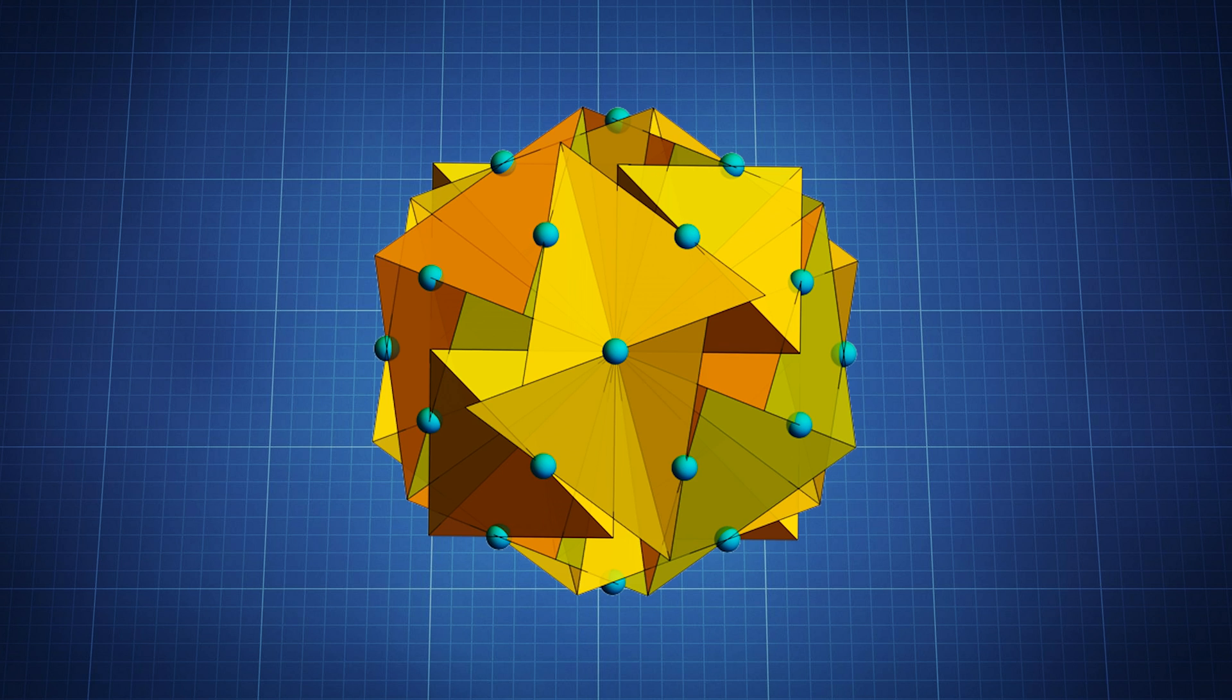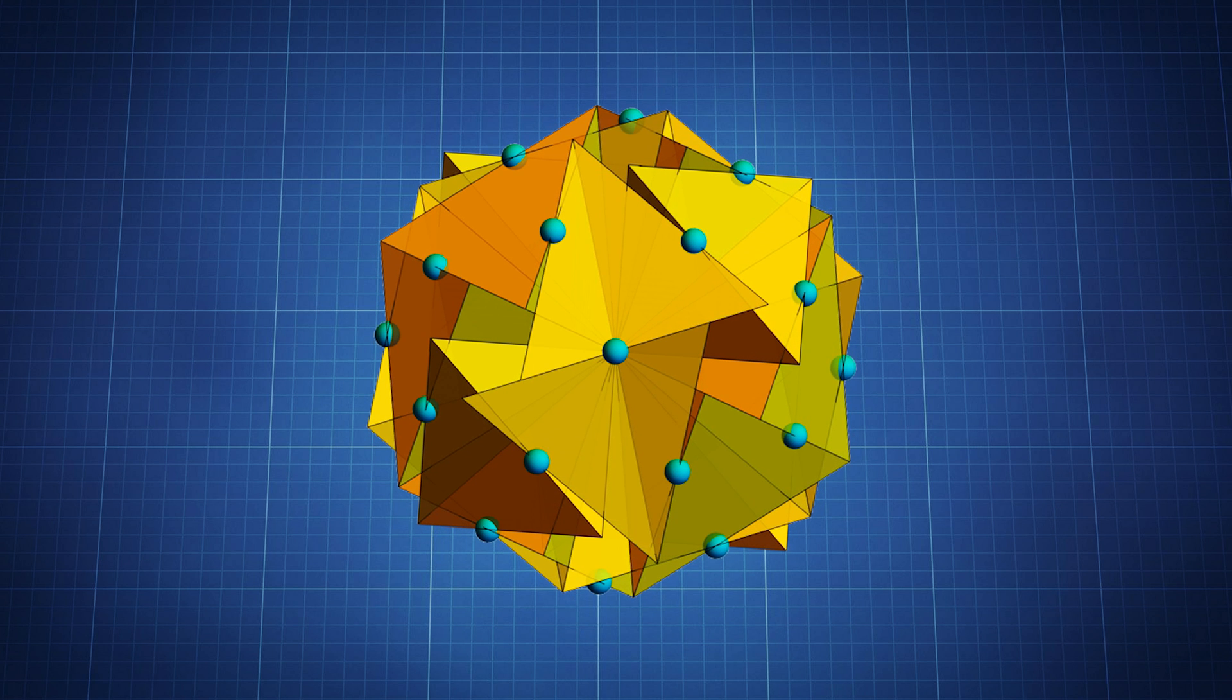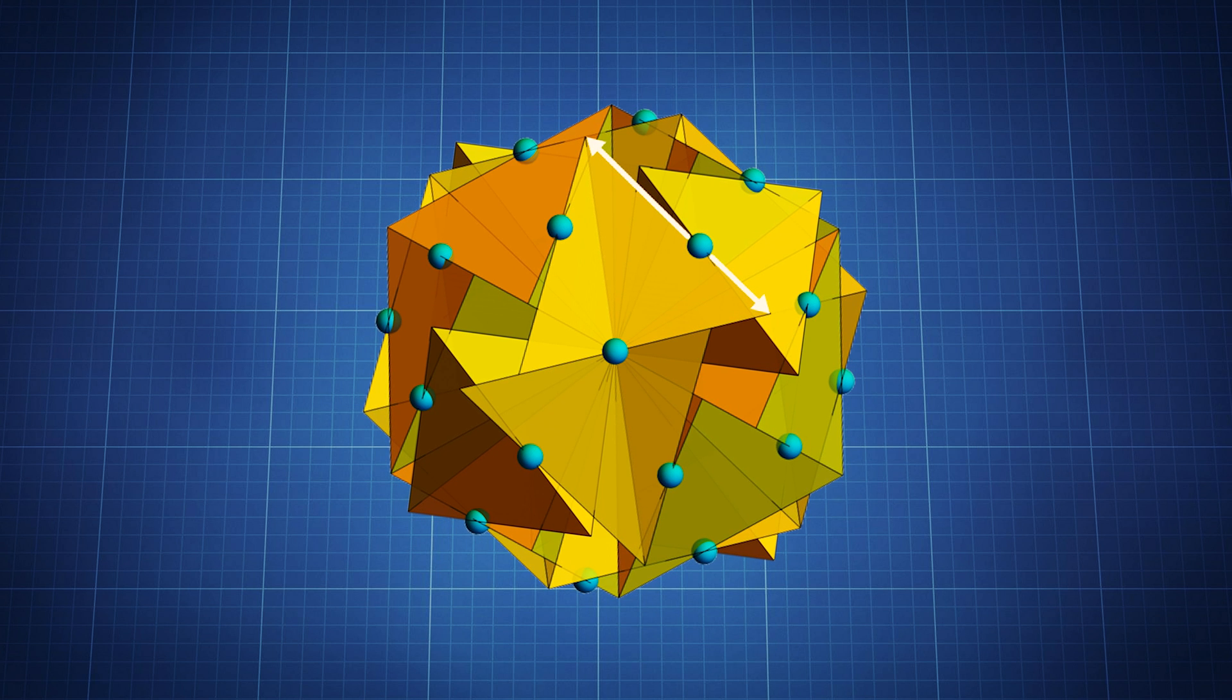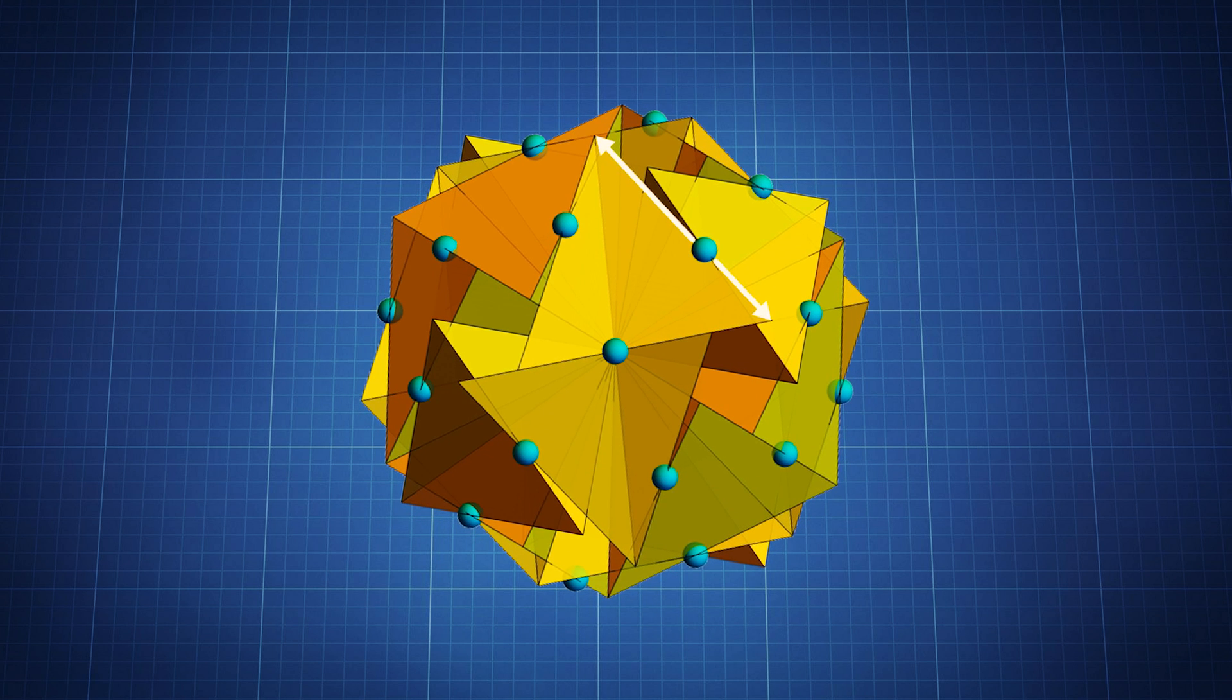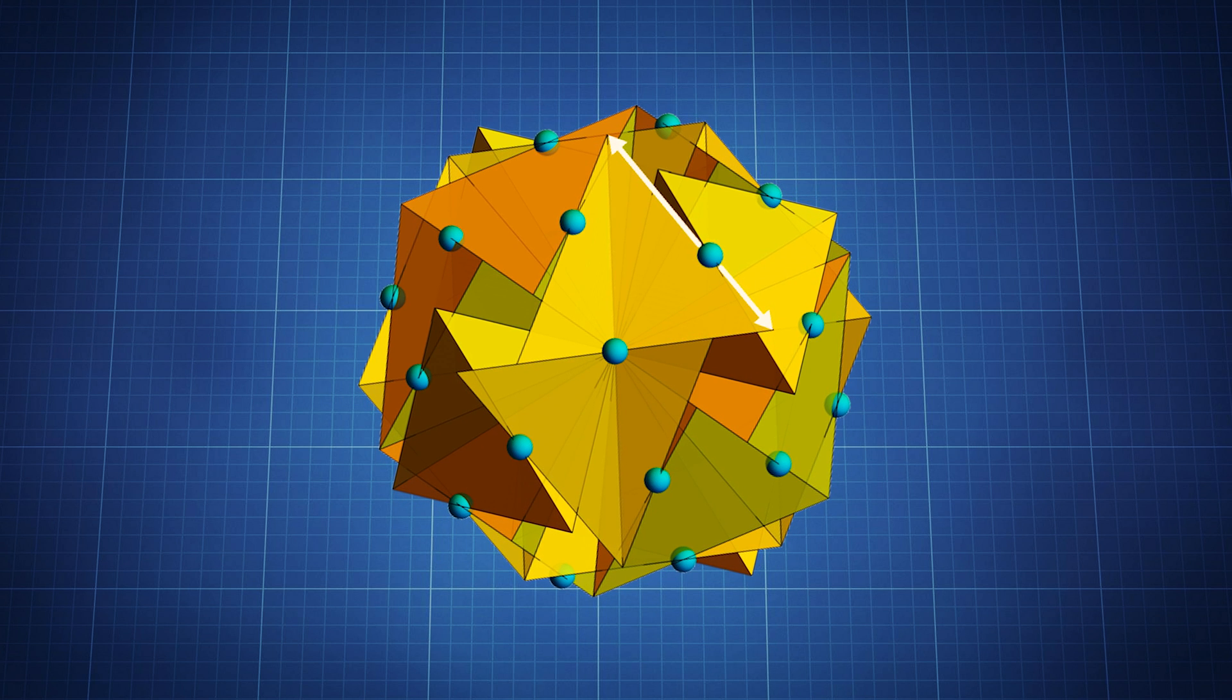And where the edges cross on this group of 20 tetrahedra, it divides the edge of a tetrahedron into the golden ratio. And if you were to rotate it the opposite direction, it would divide each edge into the golden ratio on the other side of the edge.